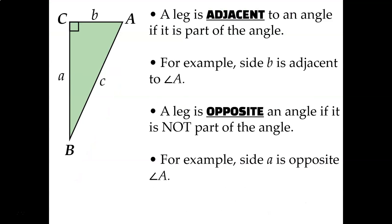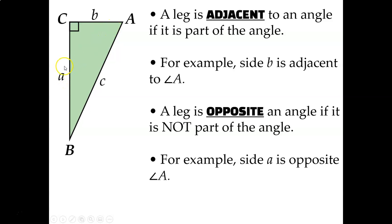For example, if we're focusing on angle A in this diagram, leg B would be adjacent to angle A because it's one of the sides that creates angle A. The other side that creates angle A is C, which is the hypotenuse. B would be adjacent, whereas A would be opposite — it's the side length across from angle A, on the other side of the triangle.